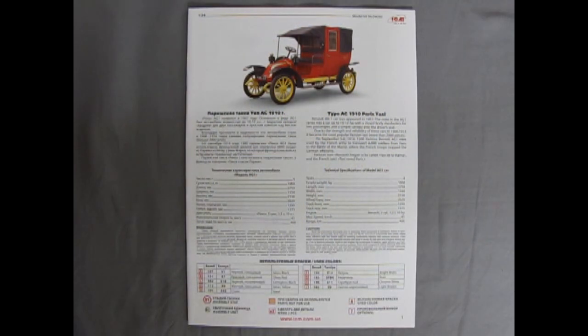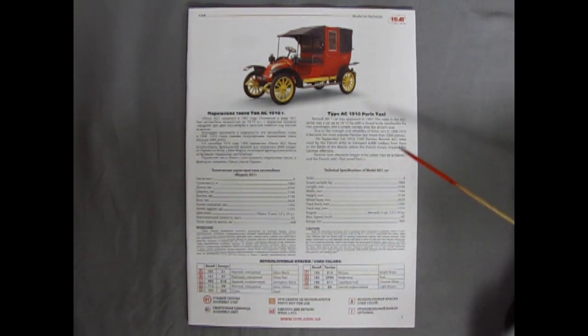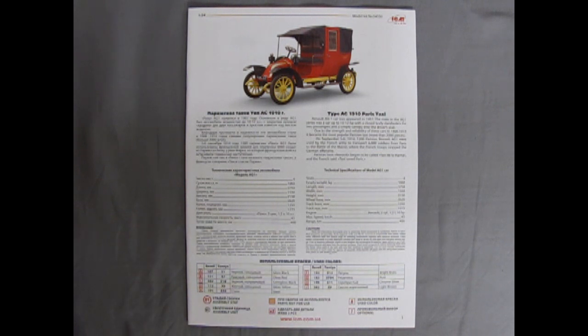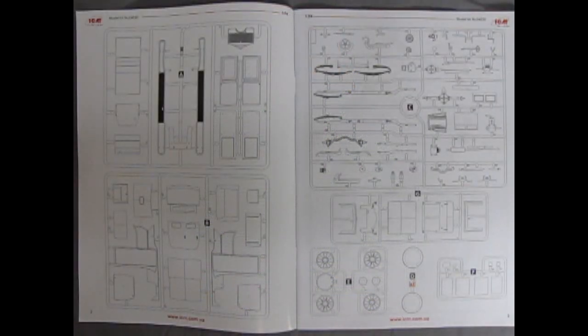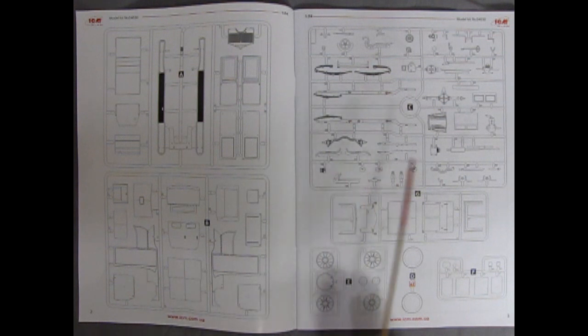The colorful instruction sheet is written in Ukrainian as well as in English. This column tells you everything you need to know about the Type AG 1910 Paris taxi. Down below we have Revell and Tamiya paint callouts in Ukrainian and English, and the detail of what's going on with the symbols. The instructions also include a full parts map of all the sprues contained within the kit.